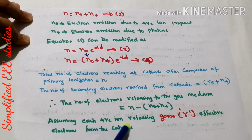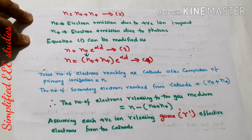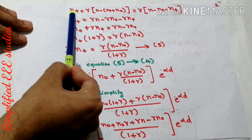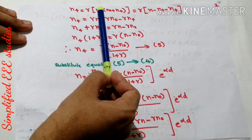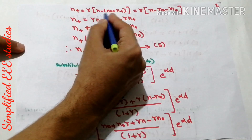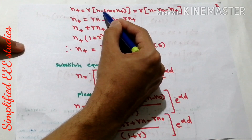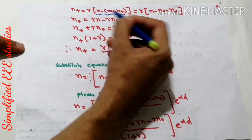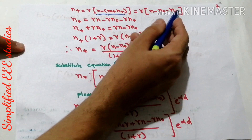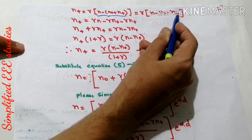Let us assume each positive ion releases gamma (γ) effective electrons from the cathode, where gamma is known as Townsend's secondary ionization coefficient. The total number of secondary electrons released, N⁺, equals gamma times the total number of electrons releasing to the gaseous medium, which is γ(N − N₀ − N⁺). Expanding the bracket: N⁺ = γN − γN₀ − γN⁺.